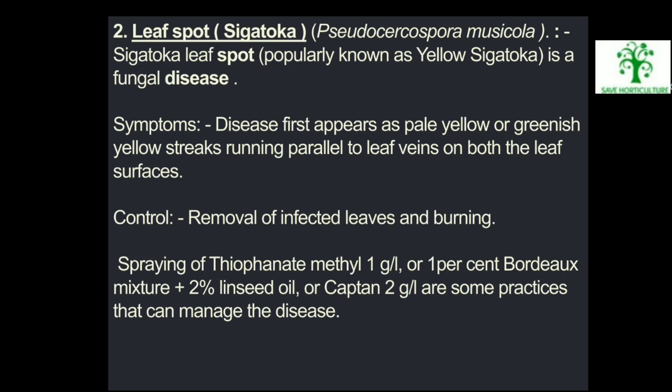Second disease — Leaf Spot / Sigatoka (Pseudocercospora musicola): Sigatoka leaf spot, popularly known as yellow sigatoka, is a fungal disease. Symptoms: Disease first appears as pale yellow or greenish-yellow streaks running parallel to leaf veins on both leaf surfaces. Control: Removal of infected leaves and burning. Spraying of thiophanate-methyl 1g per litre, or 1% Bordeaux mixture plus 2% linseed oil, or captan 2g per litre are practices that can manage the disease.